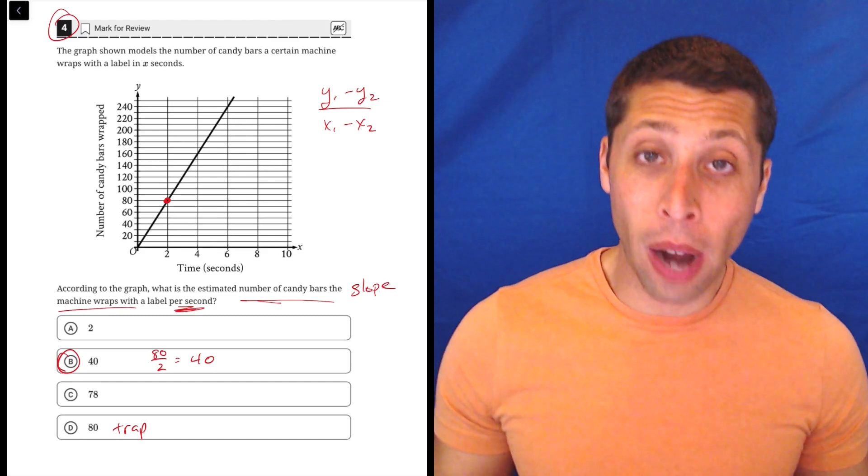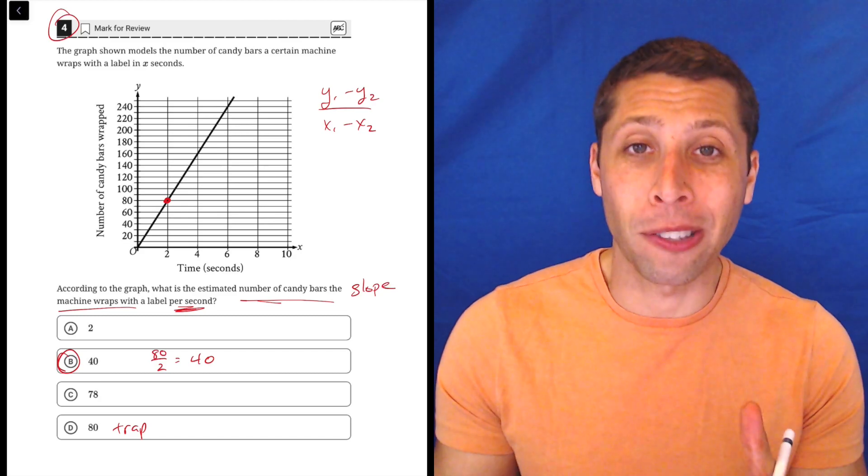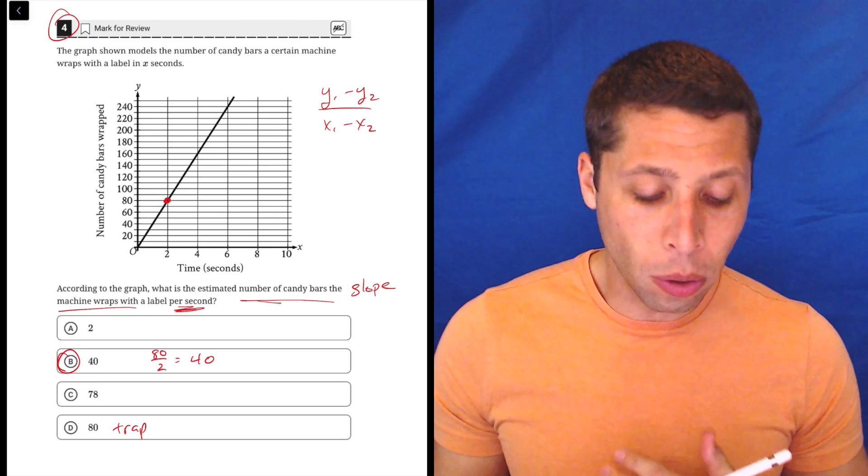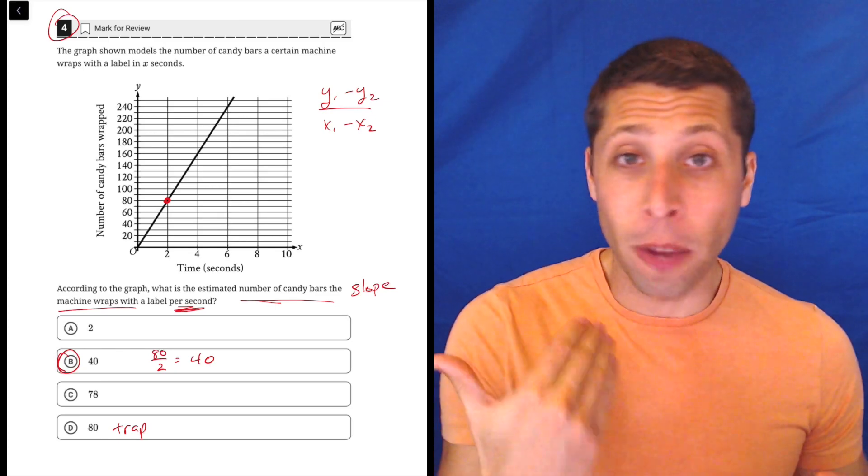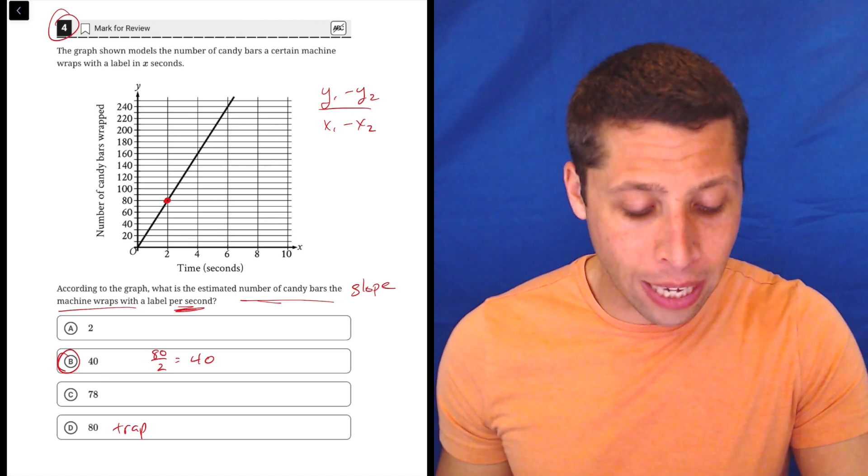So this doesn't surprise me that there was such a simple arithmetic move that we could make here just by thinking about slope and simplifying basically what a unit rate is. So lots of ways to think about it, but again, I think a generally good idea on PSAT and SAT questions is to stay away from complicated formulas if you can.